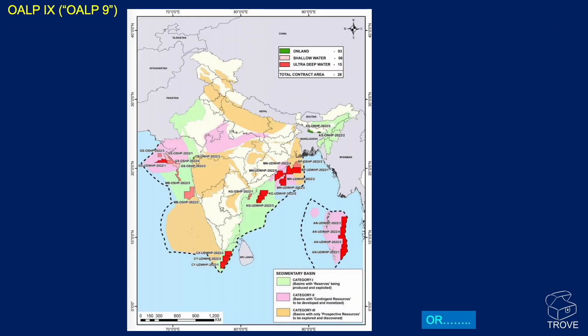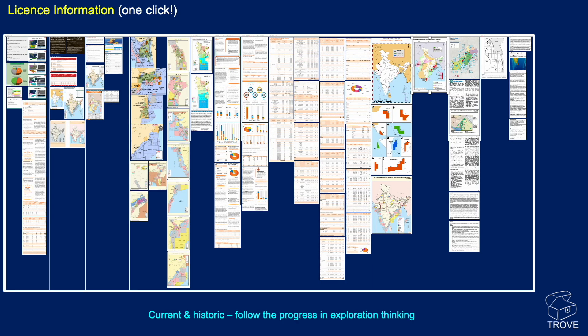You can look at just the OALP 9 block map, or you can look at all the license information. One click of a button gets you all the current and historic license information by region and by country, and you can follow the progress in exploration thinking and evolution.